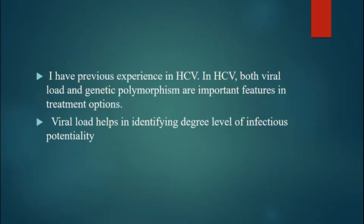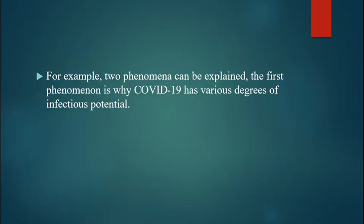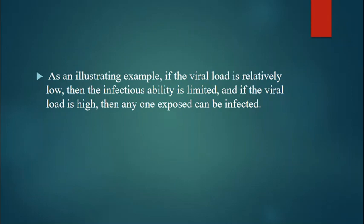Viral load helps in identifying the degree and level of infectious potentiality. Two phenomena can be explained. The first is why COVID-19 has various degrees of infectious potential. As an illustrating example, if the viral load is relatively low, then the infectious ability is limited. If the viral load is high, then anyone exposed can be infected.